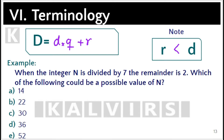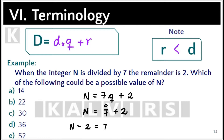For the example shown below, when the integer n is divided by 7 the remainder is 2. Which of the following could be a possible value of n? We can apply the division formula: the dividend is n, the divisor is 7, let q be the quotient, and 2 is the remainder.